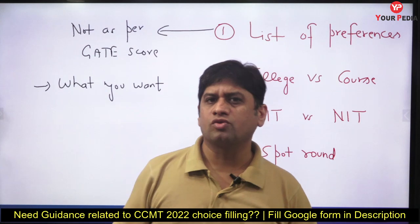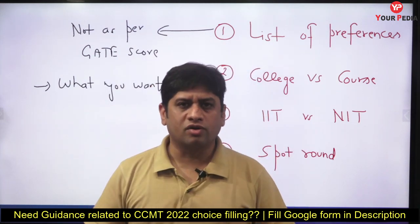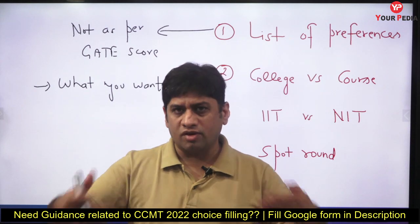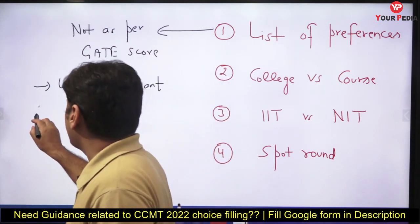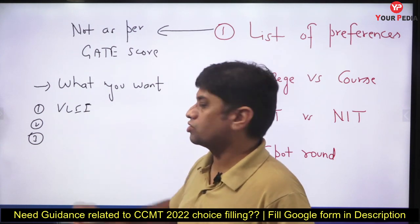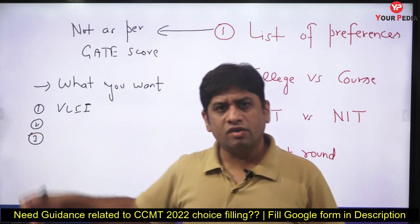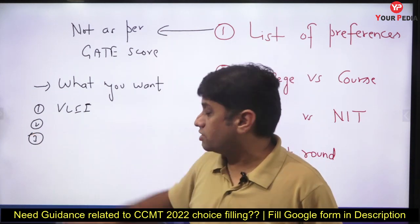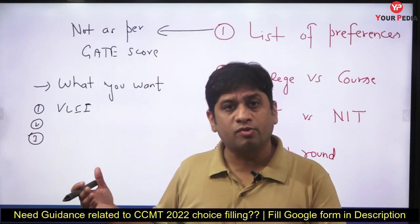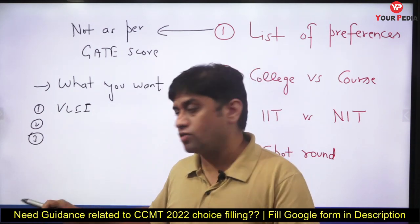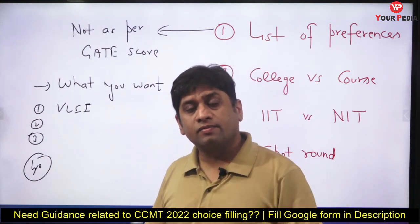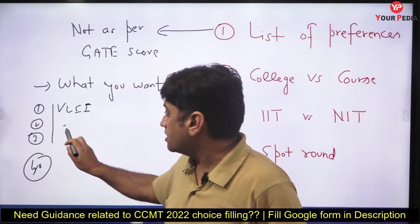Whatever is your best option — whether your GATE score is high or low — give it number one. For example, if you want NIT Suratkal VLSI the most, give it number one. If your score is low and you don't get it, you won't be eliminated; you'll get the second, third, or fourth choice. In round one you may get the fortieth option, and in the next round you should ensure the first 39 are all better than that fortieth.